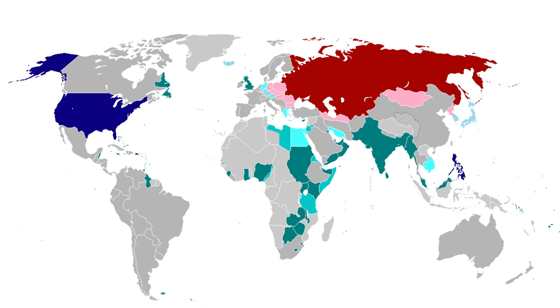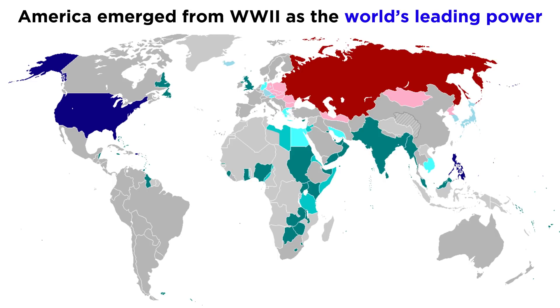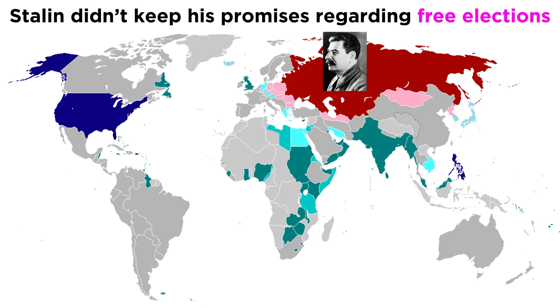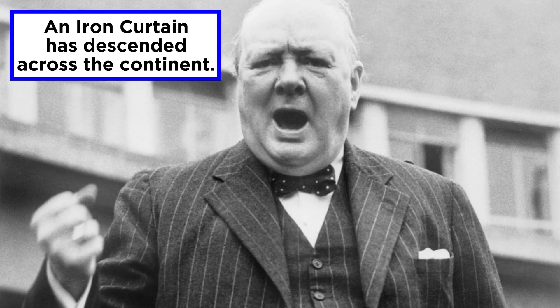Truman's presidency marked a turning point in American foreign affairs. It had emerged from World War II as the world's leading power, and under Truman, it renounced its isolationist past to prevent what it saw as communist aggression in Europe and Asia. As Stalin began reneging on promises he'd made regarding free elections in the Soviet-occupied territories of Eastern Europe, the USSR came to be viewed as the successor to Nazi Germany. In a speech condemning the Soviet occupation, Winston Churchill famously proclaimed, "An iron curtain has descended across the continent." This is typically regarded as the opening volley of the Cold War.